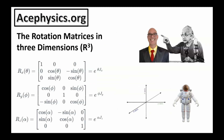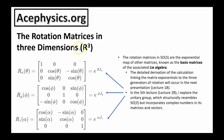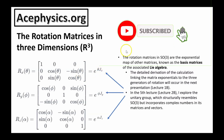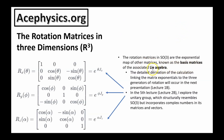Here I introduce the three fundamental rotation matrices in R3, each corresponding to one of the three degrees of freedom. Rx(θ) rotates an object about the x-axis by angle θ. Ry(φ) rotates the object about the y-axis by angle φ. Rz(α) rotates about the z-axis by angle α. These matrices are known as the generators of the group SO3. These rotation matrices can be written as the exponential of a different matrix — the rotation matrices in SO3 are the exponential map of other matrices, known as the basis matrices of the associated Lie algebra. The detailed derivation linking the matrix exponential to the three generators of rotation will occur in the next presentation.